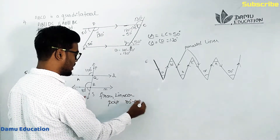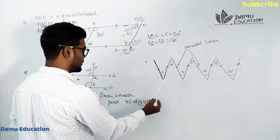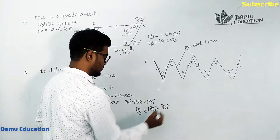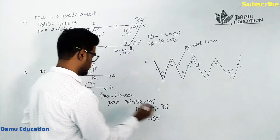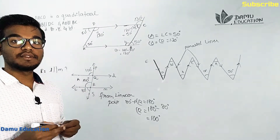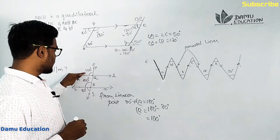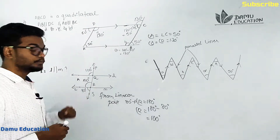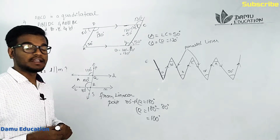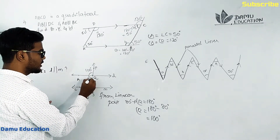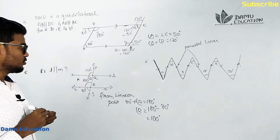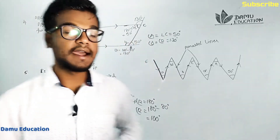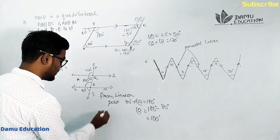From linear pair angles: 80 degrees plus angle R equals 180 degrees, so angle R equals 180 minus 80 degrees, which equals 100 degrees. We now have 100 degrees on both sides — these are corresponding angles, and since they are equal, we can say l and m are parallel to each other.